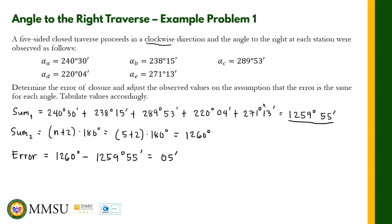The correction is 05 minutes divided by 5 angles, which gives 01 minute per angle. Since this is a positive error, we apply a positive correction of +01 minute. We need to add this correction to each of the given observed angles to obtain the adjusted angles.